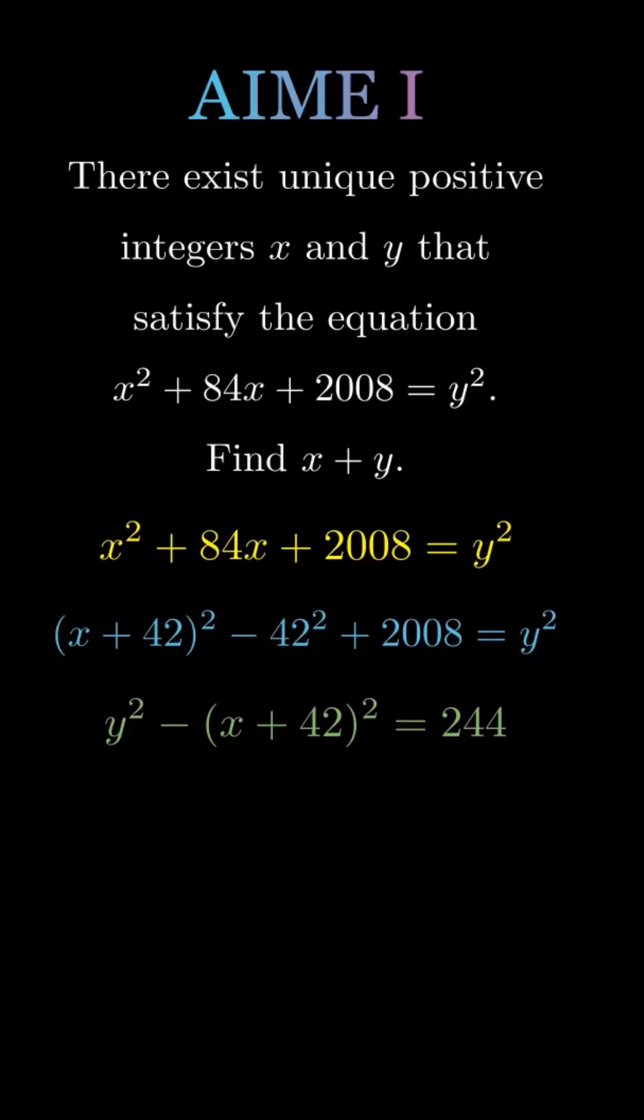we get y squared minus x plus 42 squared equals 244, a difference of squares.